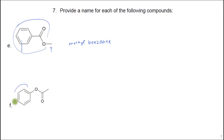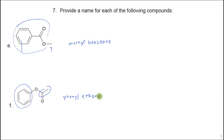In part F, the group on the other side of the oxygen is just a benzene ring, so this is phenyl. You can use 'ethan-' instead of 'ethanoic acid' — you drop the '-ic acid' and end it with '-ate.' This one could also be called phenyl acetate, which would be the common name.